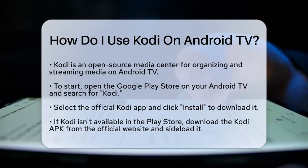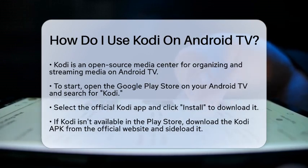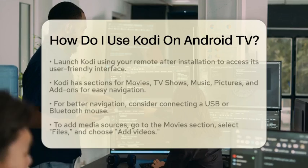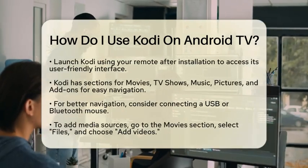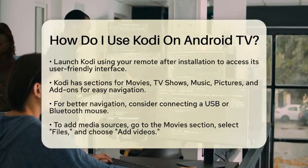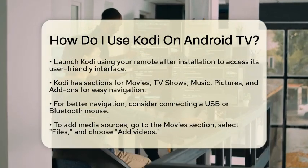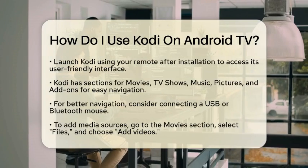If your Android television does not have access to the Google Play Store, or if Kodi is not available, you can sideload the application. To do this, download the Kodi APK file from the official Kodi website using a web browser or another device. After downloading, transfer the file to your Android television and install it from there.